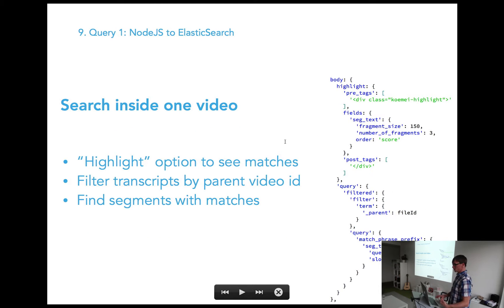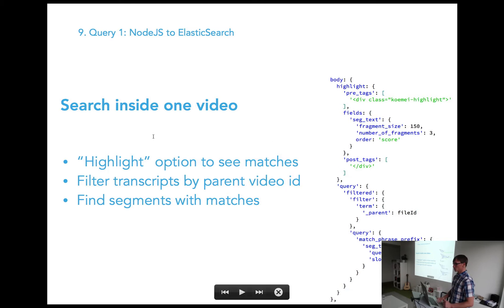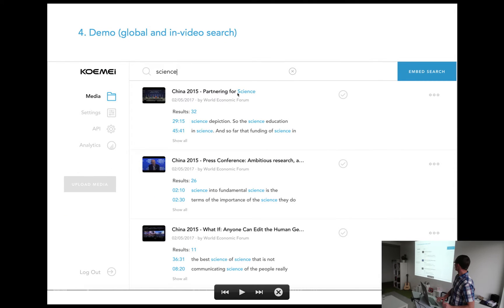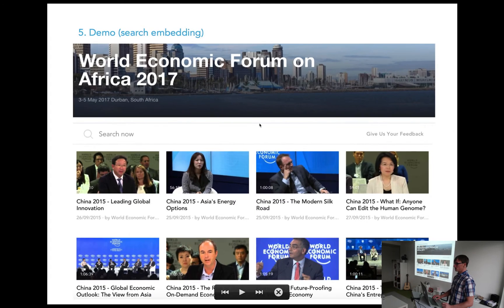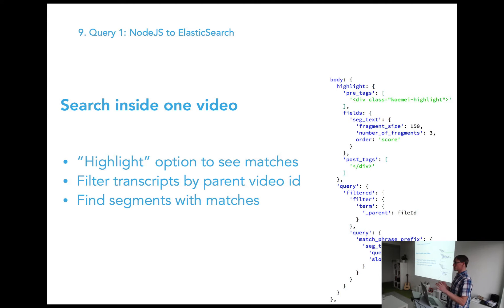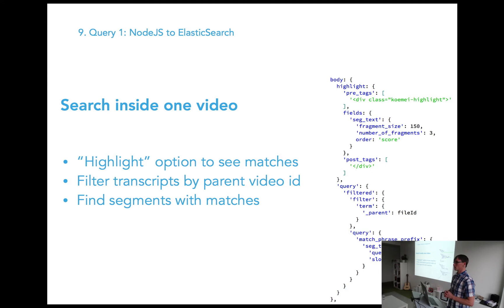We had three major Elasticsearch queries. The first one searches within a single video — we used the highlight option to show where matches occur in the transcript. We filter transcript segments by their parent video ID, apply highlighting, and return the list of segments that match the query. This is how users can see exactly which part of a video matches their search.